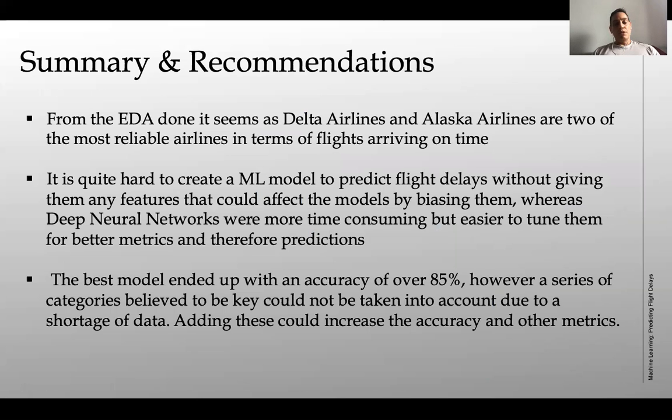So as a summary recommendation from the EDA done, it seems as Delta airline and Alaska airline are two of the most reliable airlines in terms of flights arriving on time. It is quite hard to create an ML model to predict flight delays without giving them any feature that could actually bias them. The deep neural networks were more time consuming but easier to tune. The better metrics show you that it's actually worth that time.